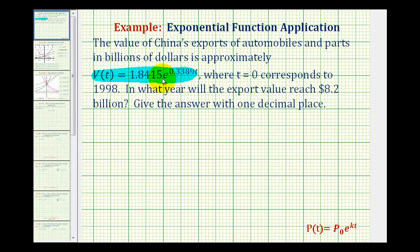So t is the time in years after 1998, and v(t) is the value of the exports. For this problem, we want to set v(t) equal to 8.2 and then solve for t.